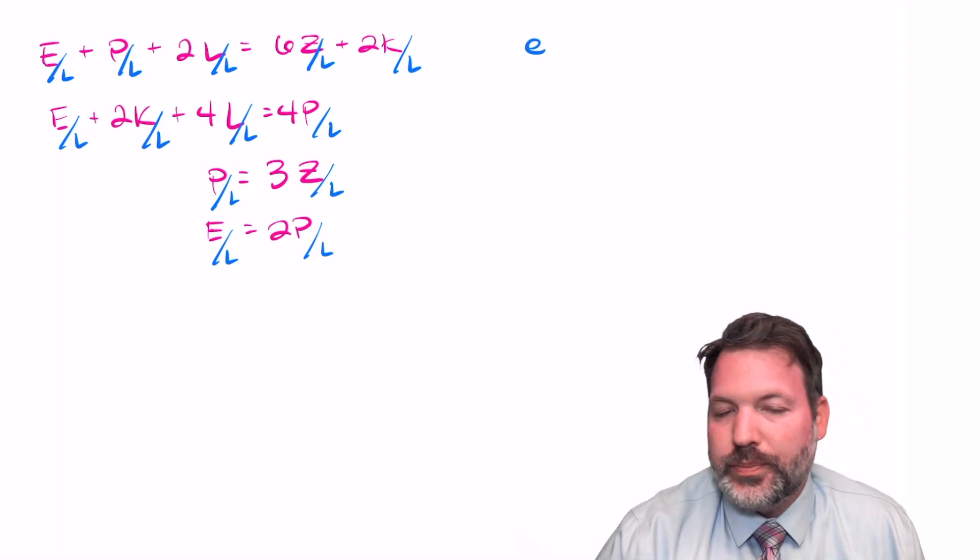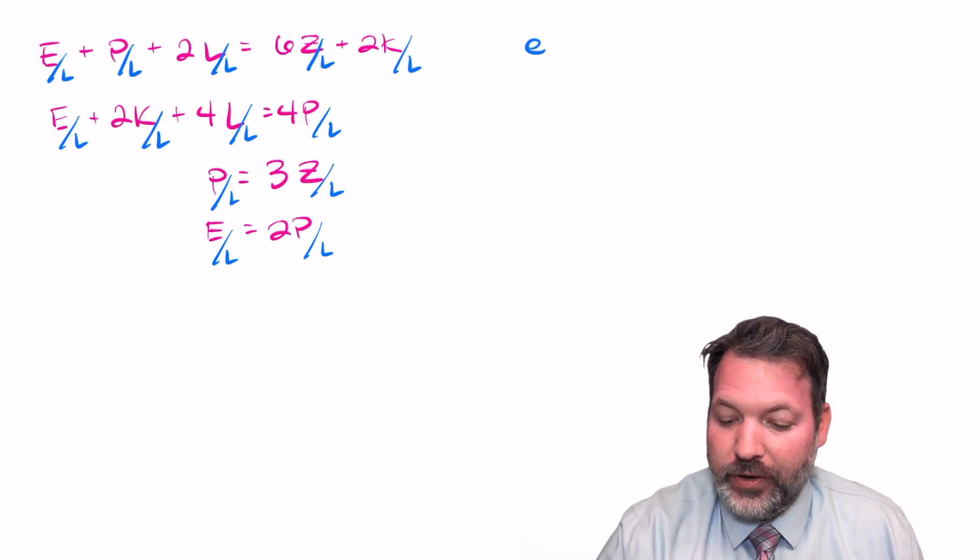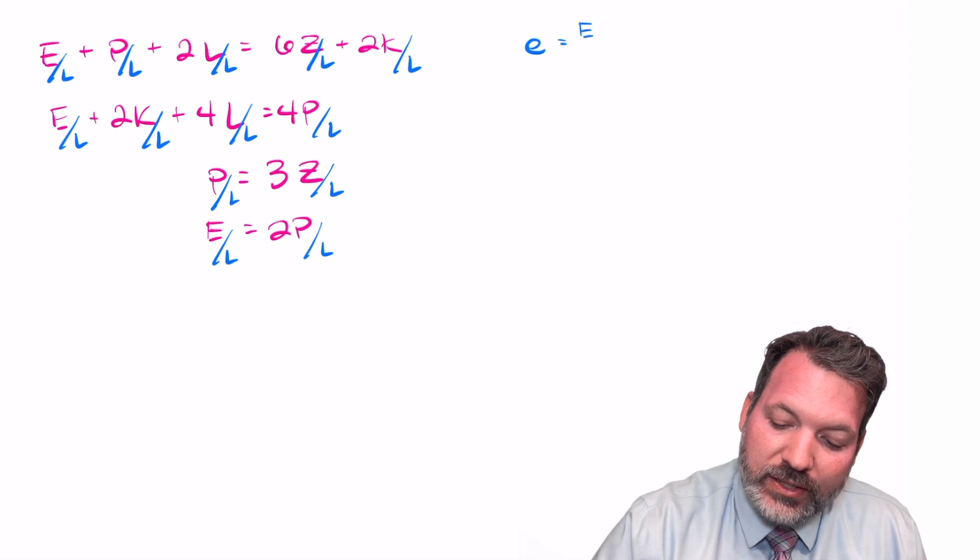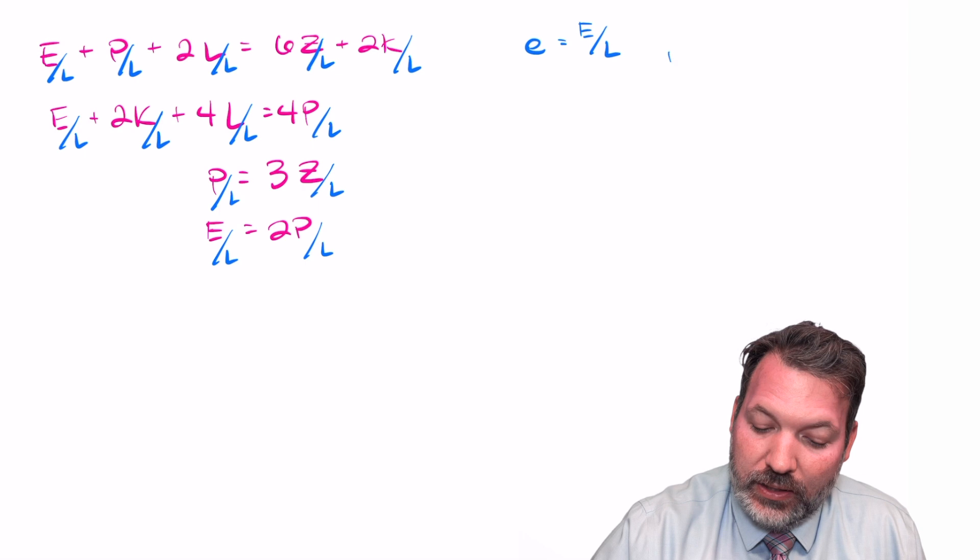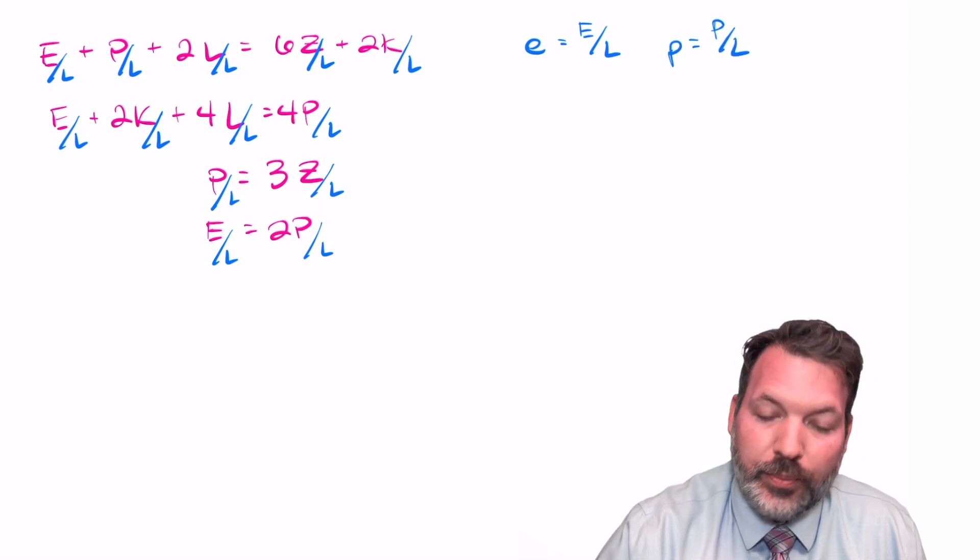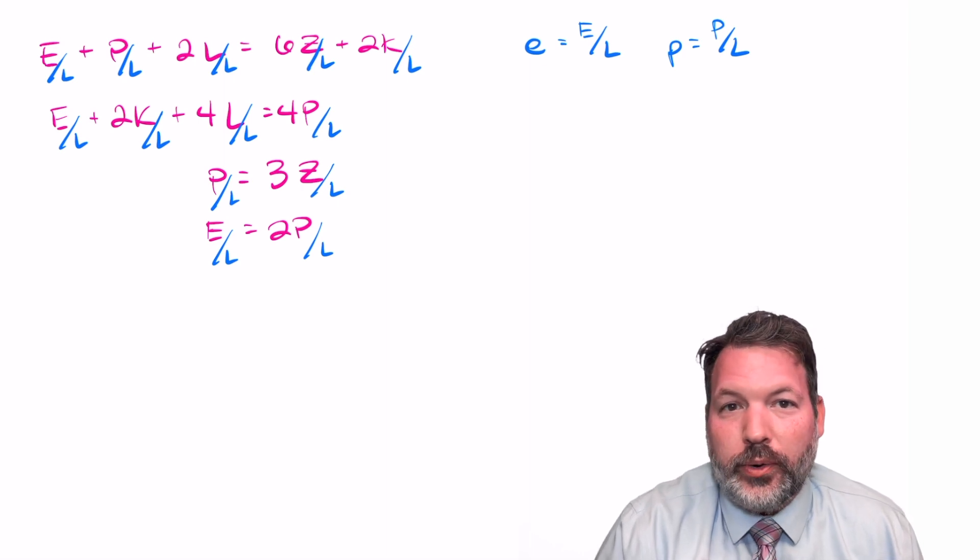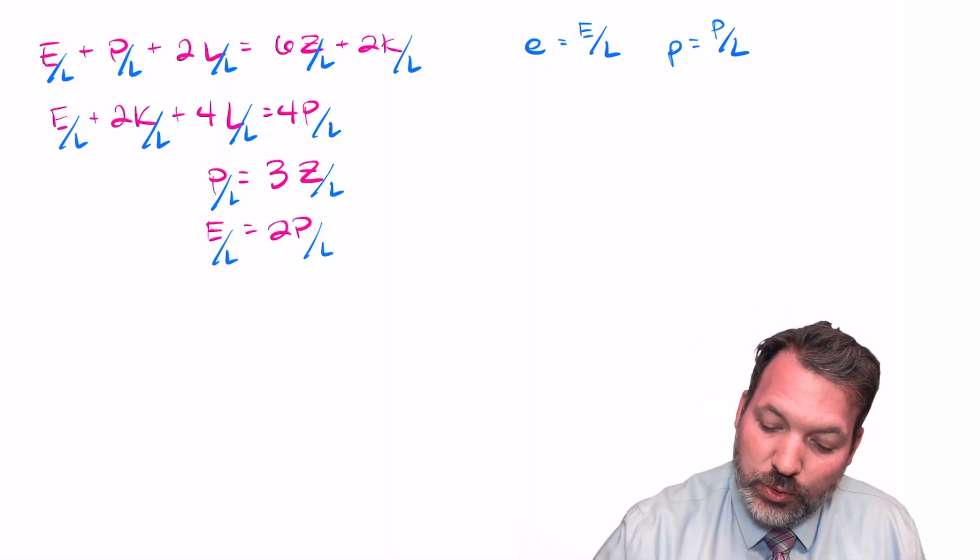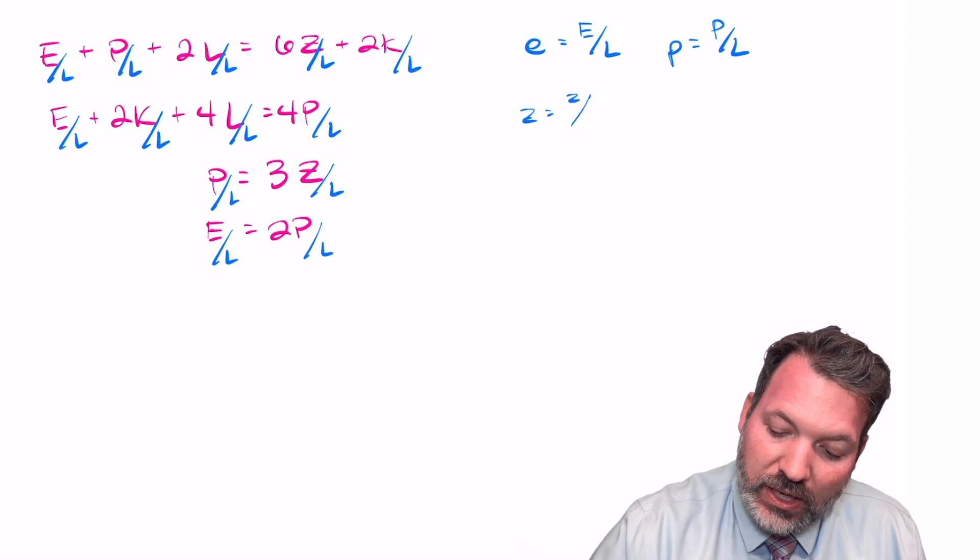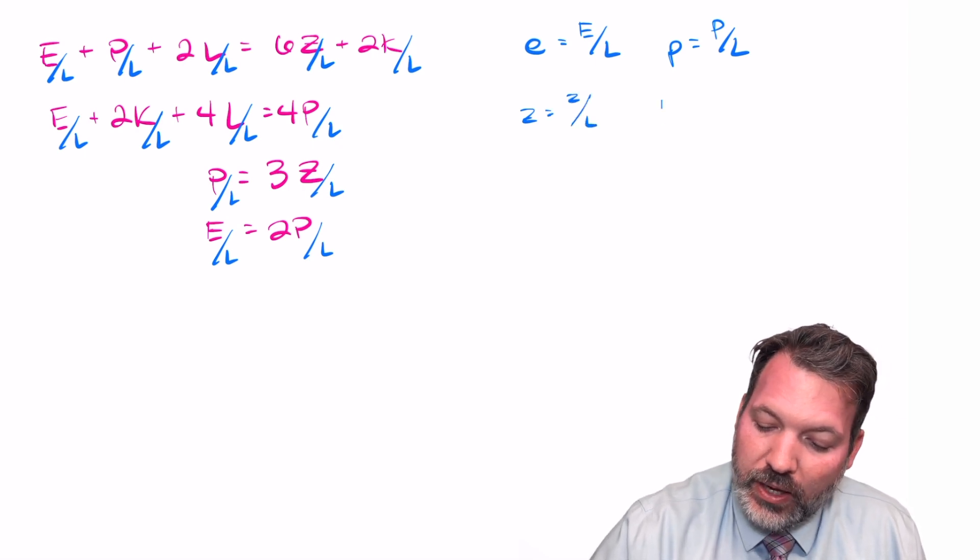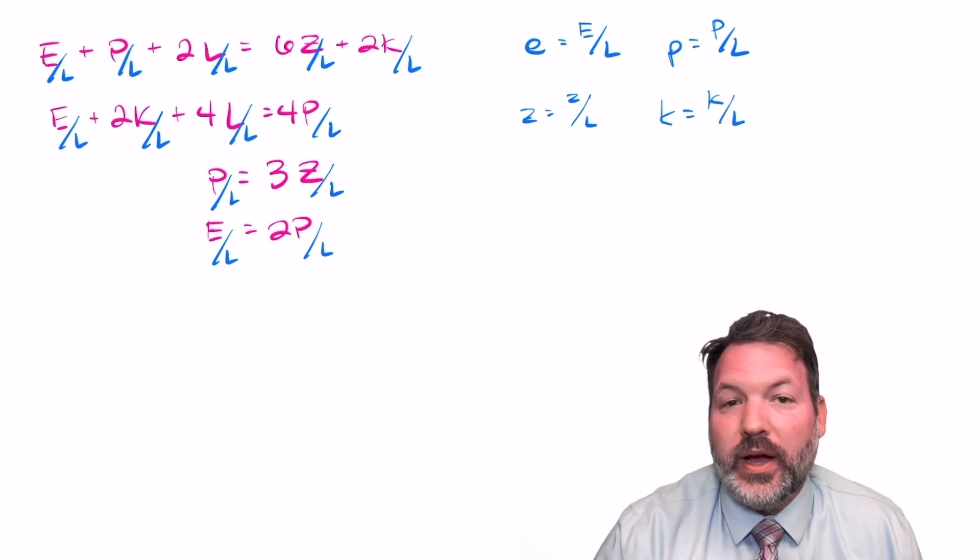So we're back at the equation level of abstraction, but we're changing the equations by dividing everything by L. This is going to give us some new variables, but I'm going to keep things simple. I'm just going to use lowercase versions of the old variable. So little e now represents the ratio of the elephant's weight to the seal's weight. And little p is the ratio of the polar bear's weight to the seal's weight. We don't actually need a little l because that's just going to be one, the ratio of the seal's weight to itself. But we can say little z is equal to the zebra's weight divided by the seal's weight. And finally, little k is equal to the kangaroo's weight divided by the seal's weight.